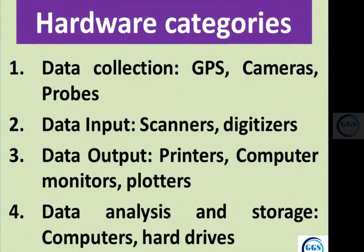Hardware is categorized into four types. Category one is data collection hardware — examples include GPS, cameras, and probes. Then we have data input hardware such as scanners and digitizers. Then we have data output hardware — examples are printers, computer monitors, and plotters. Finally, we have data analysis and storage hardware, such as your computer and hard drive.